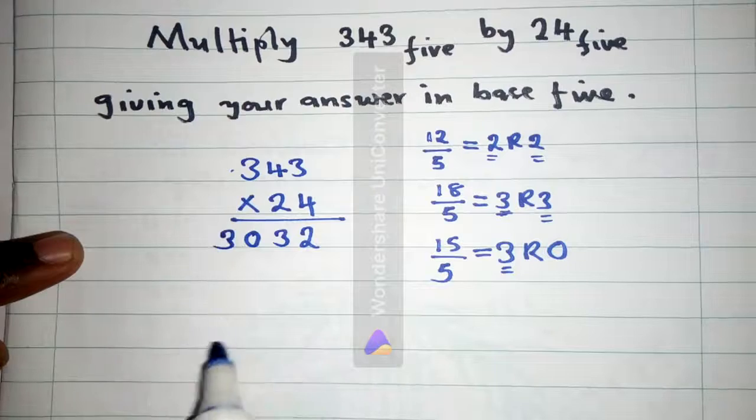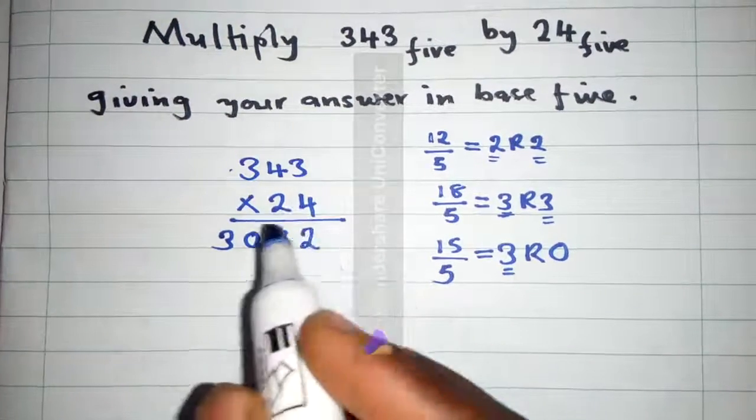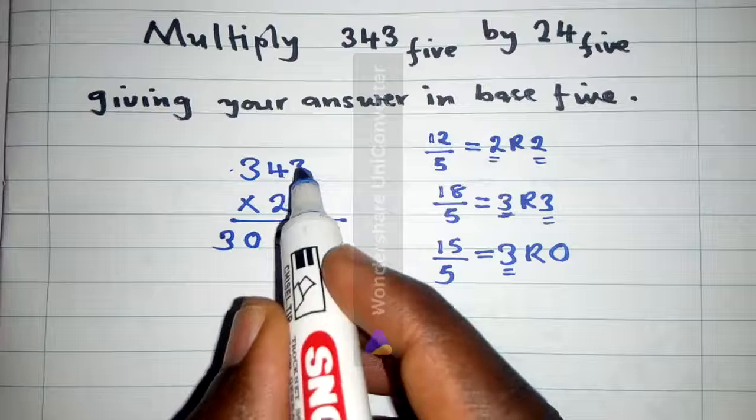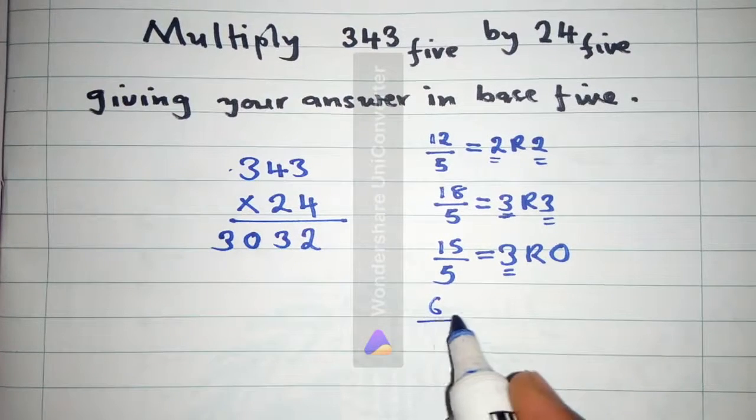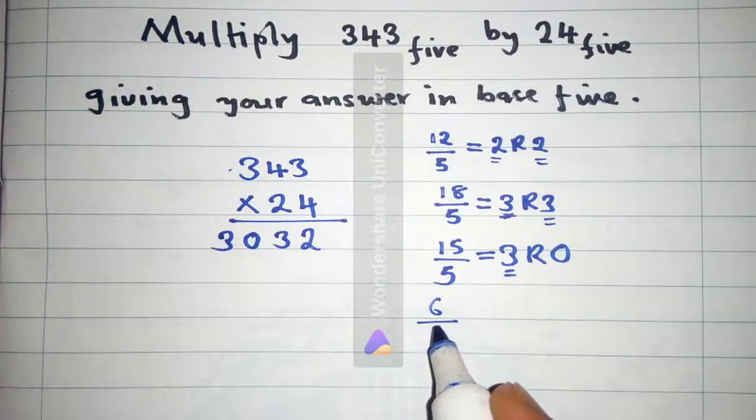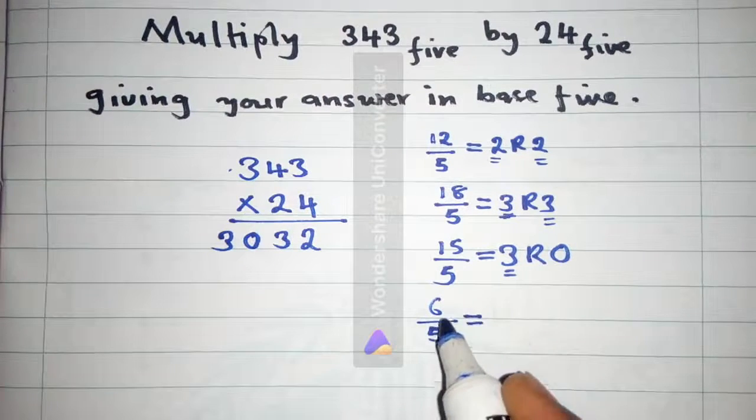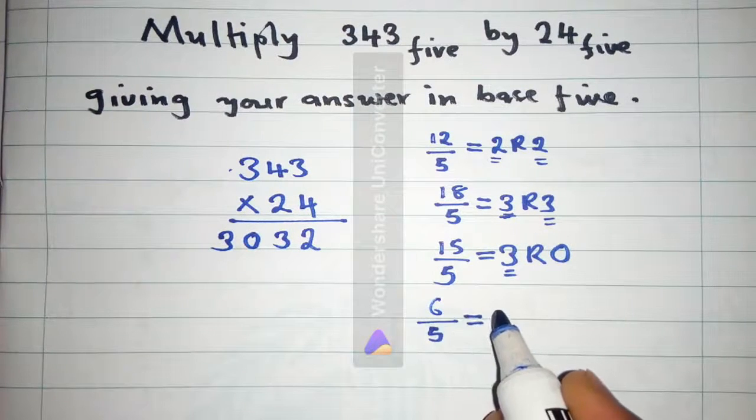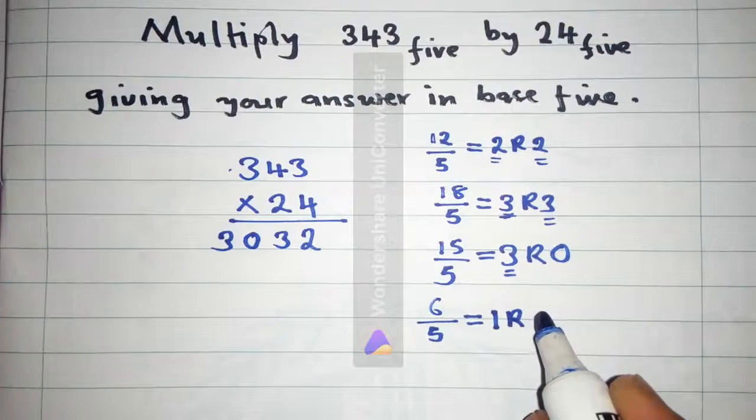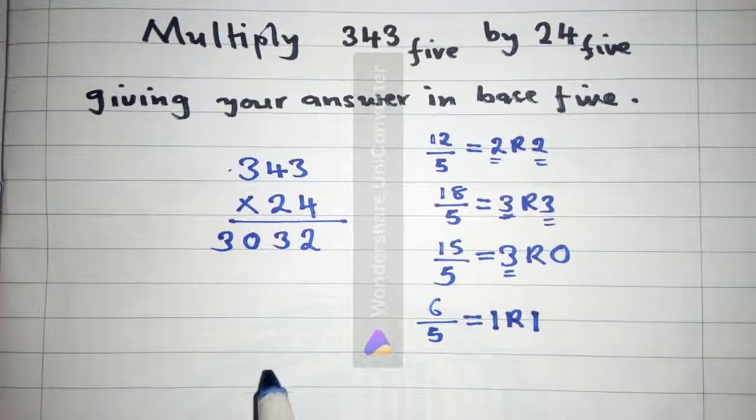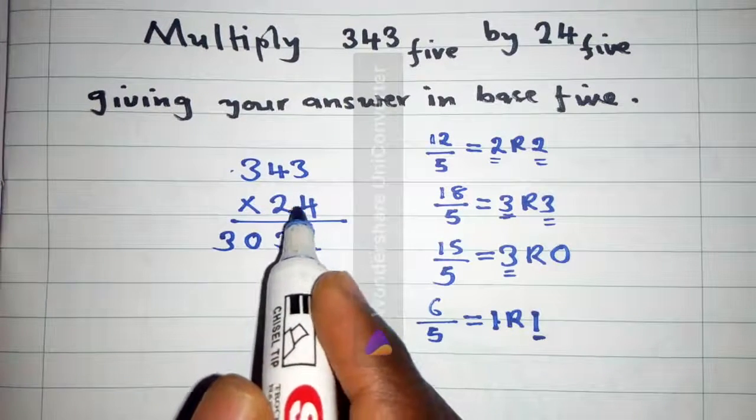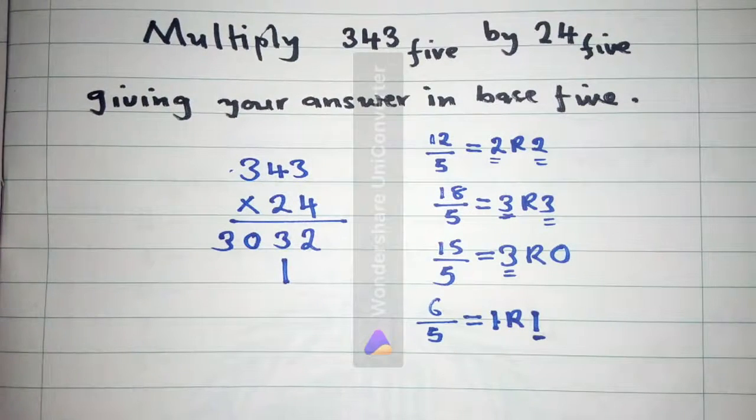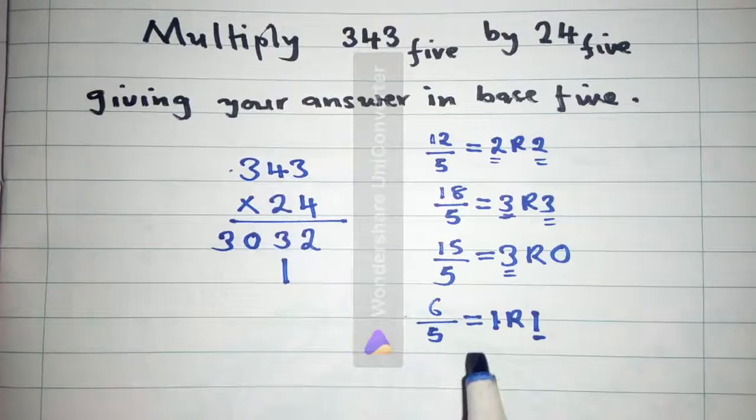Then we start with this one. 2 times 3 is 6. 6 is bigger than 4, so you say 5 into 6 is 1 remainder 1. So you write this 1 here, put it here. This 1 means... then you say 2 times 4 is 8.